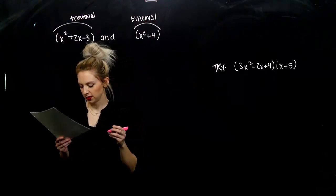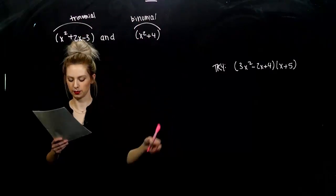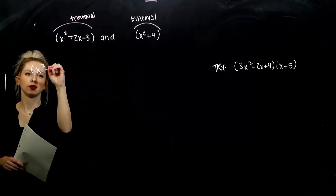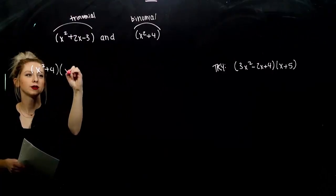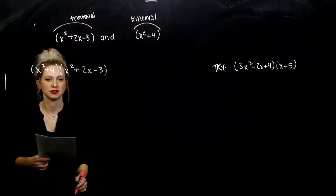And, for that to happen, again, every single term of one of them has to touch every single term of the next one. So, multiplication is commutative. The order does not matter. So, I'm going to put x squared, plus 4, first. And, x squared, plus 2x, minus 3, second.